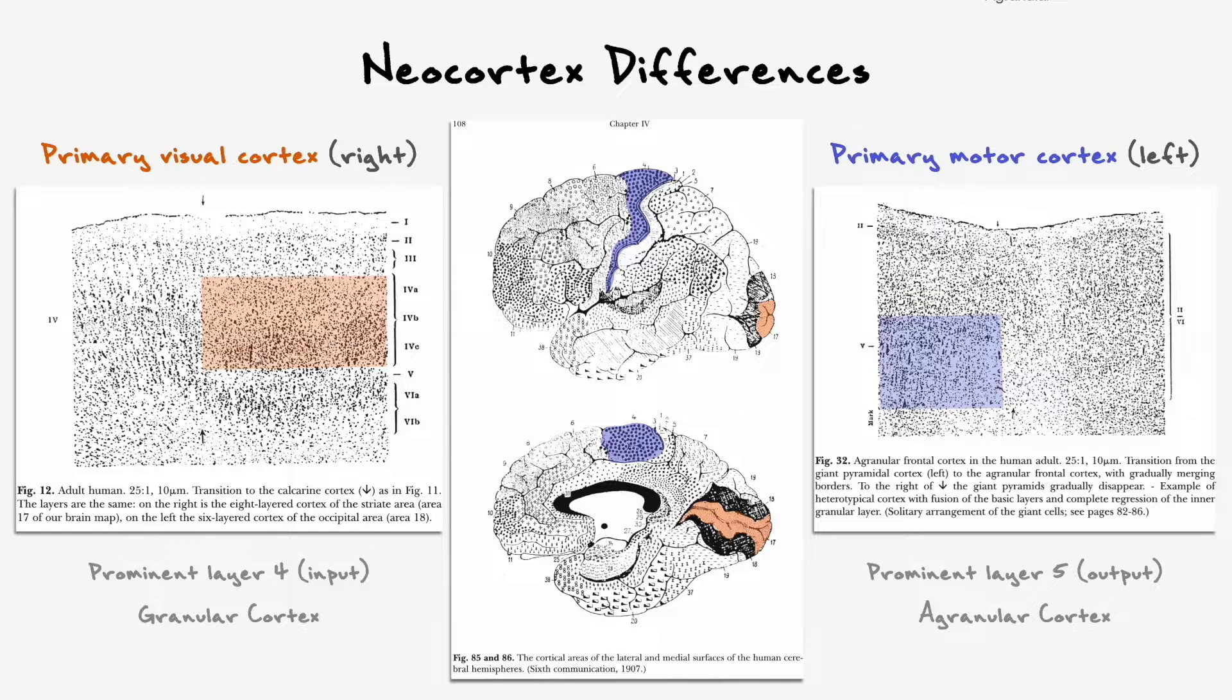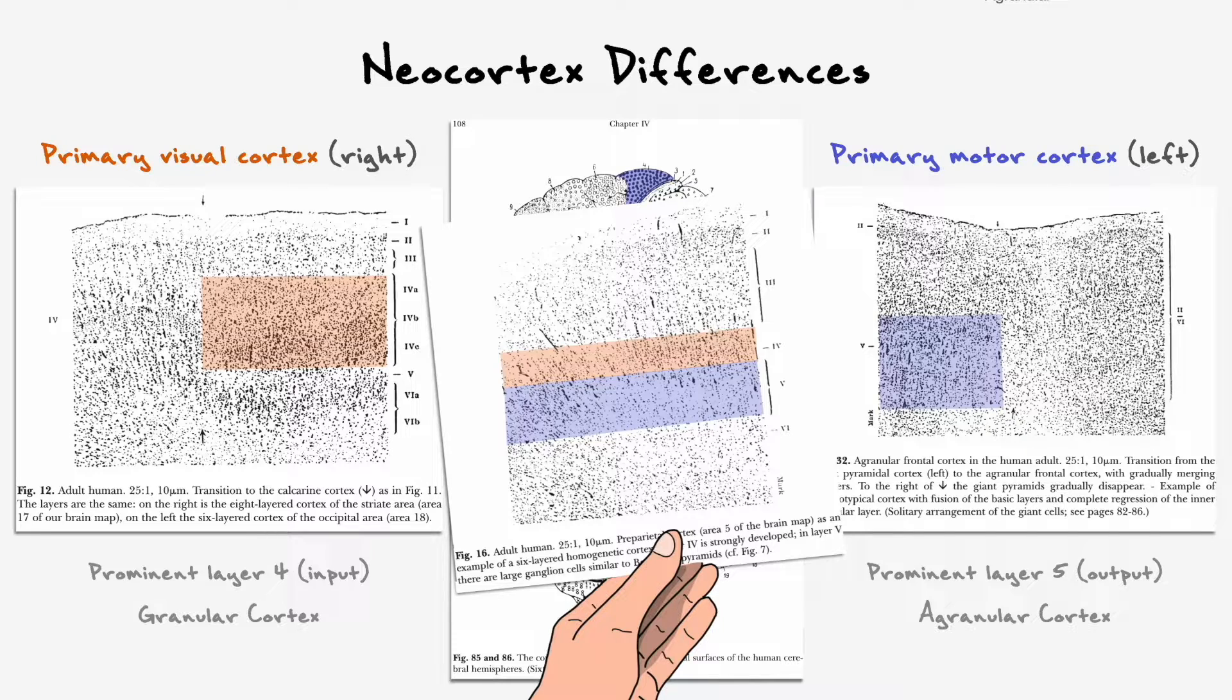In other areas that are less specialized in their function and process a more integrative role, the relative cellular layers will be between sensory and motor areas. For example, this is area 5, which as you can see, has a balanced layer 4 and 5 with respect to the two other areas we've covered. In terms of its function, area 5 is an area of the parietal lobe that is known for its involvement in somatosensory processing and many more complex cognitive functions.